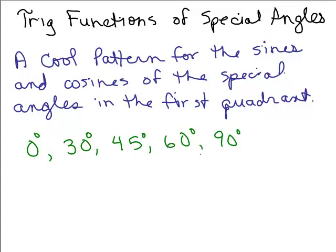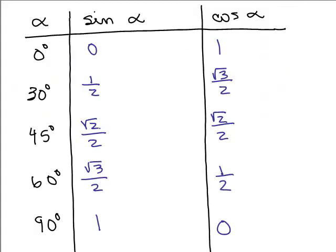There happens to be a cool pattern for the sines and cosines of the special angles in the first quadrant, including 0 degrees and 90 degrees — those aren't in the first quadrant but they lie on the quadrants. What you see here are the sines and cosines for 0, 30, 45, 60, and 90 degrees. You could figure these out yourself each time, but here's how you can get this pattern without just memorizing.